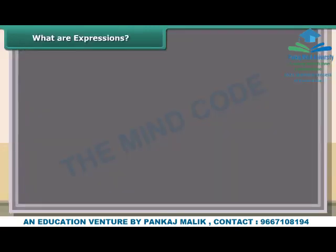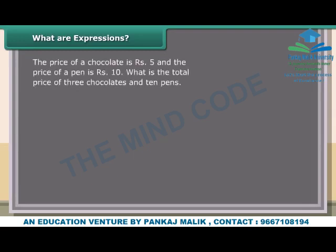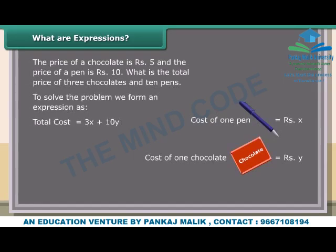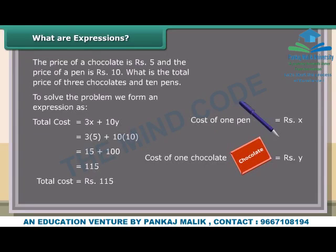What are expressions? The price of a chocolate is rupees 5 and the price of a pen is rupees 10. To find the total price of 3 chocolates and 10 pens, we form an expression: cost of 1 pen = x, cost of 1 chocolate = y, cost of 3 chocolates = 3y, cost of 10 pens = 10x. Total cost = 3x + 10y = 3×5 + 10×10 = 15 + 100 = 115 rupees.